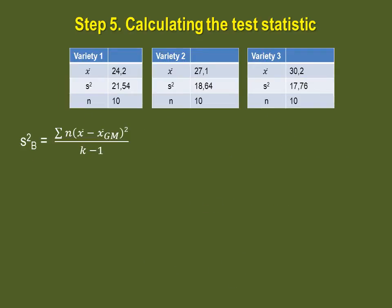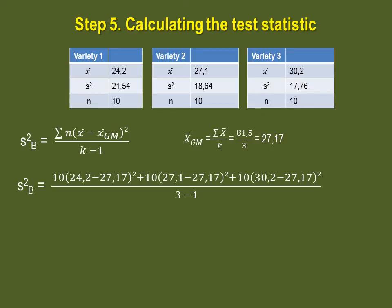Let's calculate our between sample variance for our example. We'll first calculate the grand mean. We don't have all of the values, so we will add up the sum of our sample means and divide it by 3, our number of samples, which will give us a grand mean of 27.17.